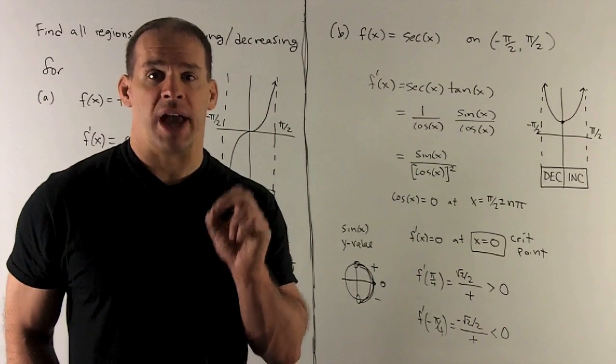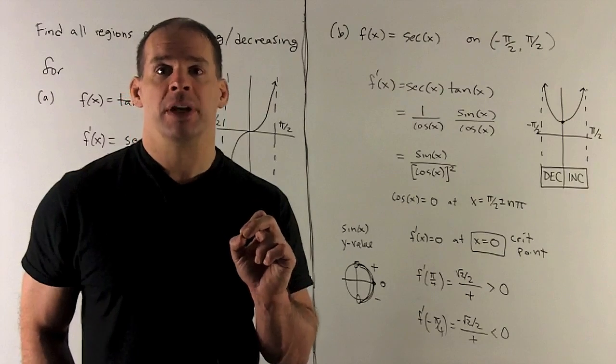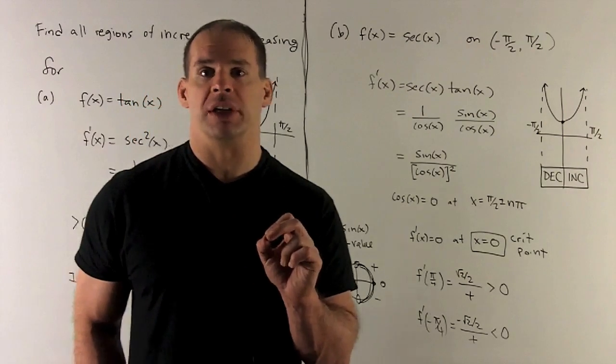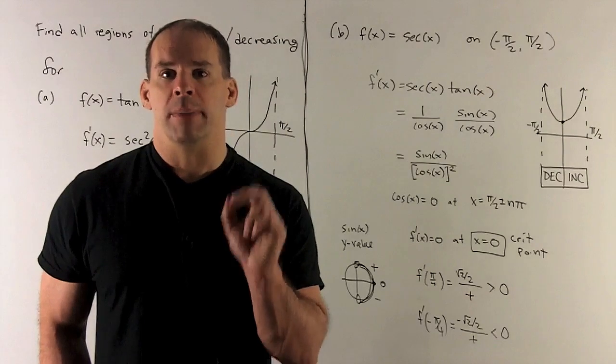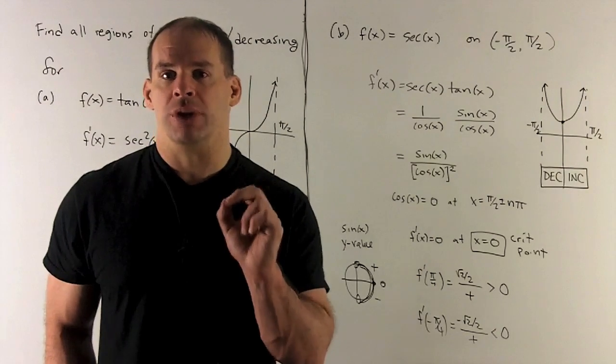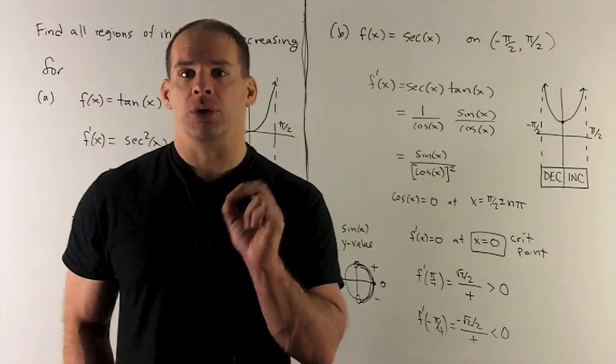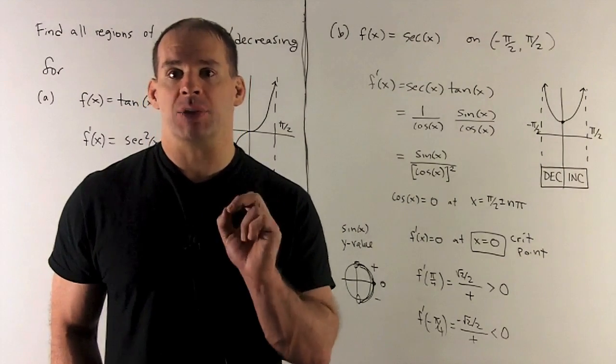Now all I need to do is check one point in each region, check its sign, and then that's going to tell me increasing or decreasing. Note here, make sure you check against the derivative, not the original function. So, point in each region, I'll use pi-fourths and minus pi-fourths.